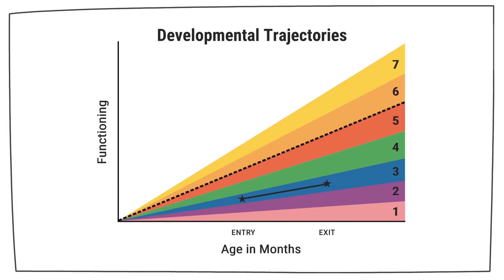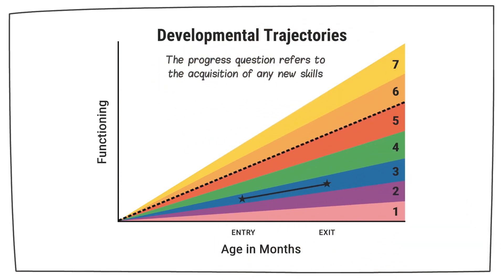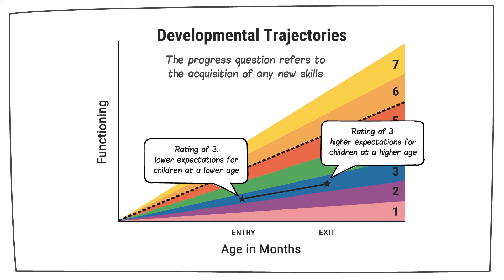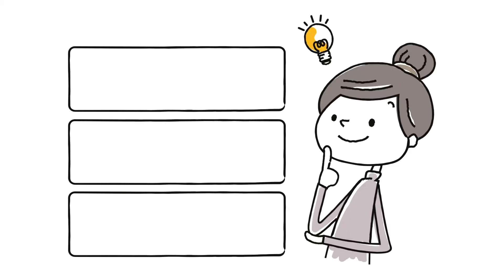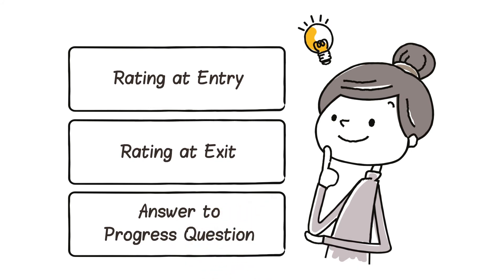Sometimes providers mistakenly answer no to the progress question for a child who has the same rating at entry and exit. The progress question refers to the acquisition of any new skills. Children who maintain a rating of 2 or higher over time are acquiring new skills to keep the same rating, because what is expected of older children developmentally is more than what is expected of younger children. By comparing entry and exit ratings and the answers to the progress question, we can convert all children's child outcome summary data into one of the five reporting categories.